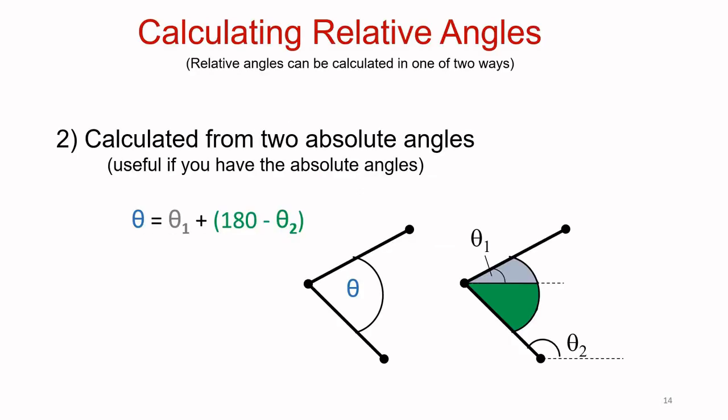The second method for calculating a relative angle is to use the two absolute angles, theta subscript 1 and theta subscript 2. For your kinematics data analysis laboratory, I would recommend using the first method rather than this one. This method can cause headaches as it requires careful attention to what angle is being calculated, and how the calculation is performed may change when the joint changes its configuration as the movement unfolds.